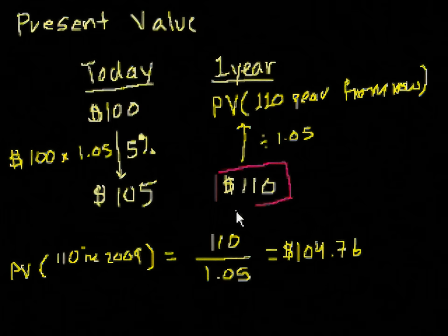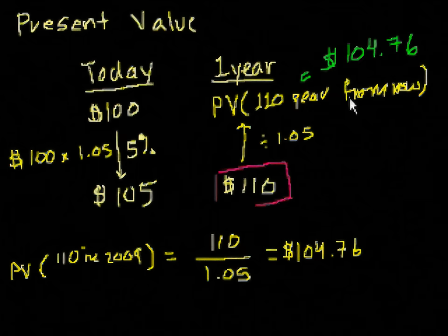So the present value of $110 a year from now, if we assume that we could invest money risk-free at 5% if we were to get it today, the present value of that is equal to $104.76.